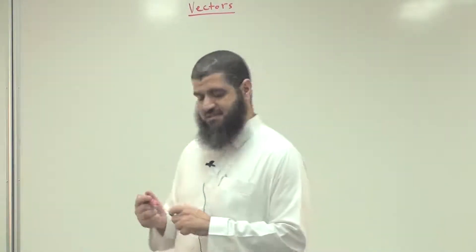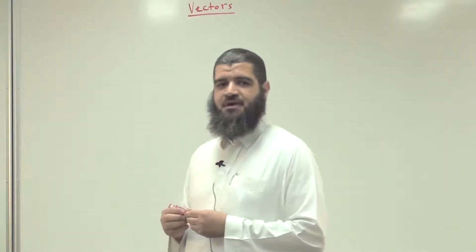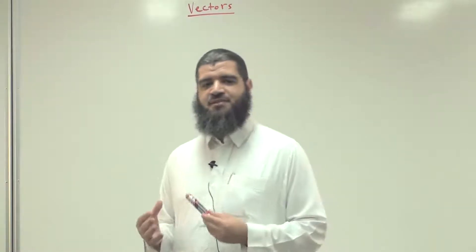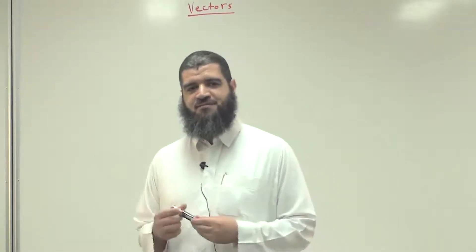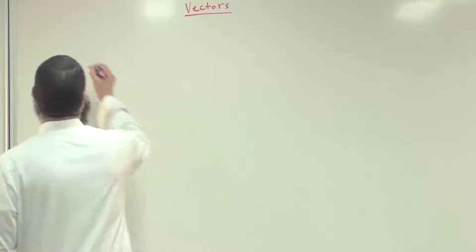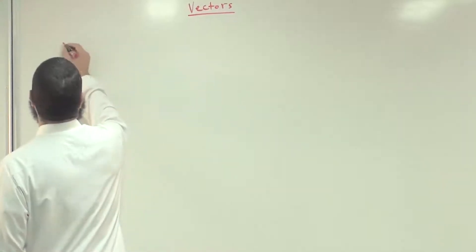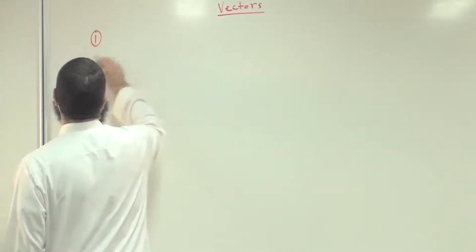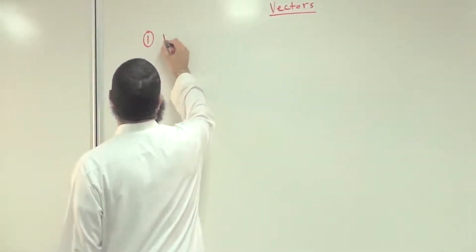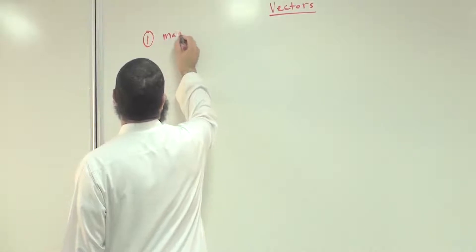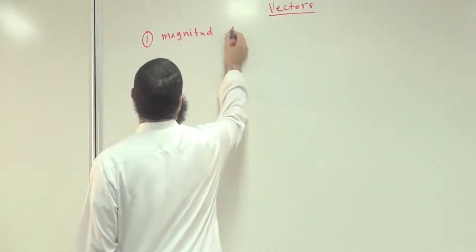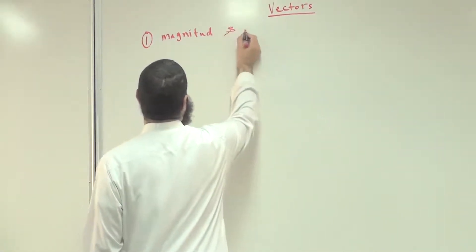Let me start by telling you what are the different ways of representing vectors. Vectors can be represented in different ways. The first way is by giving the magnitude and direction.